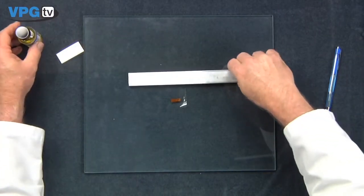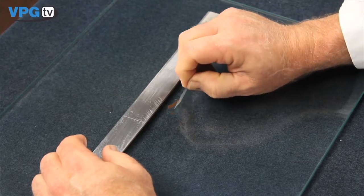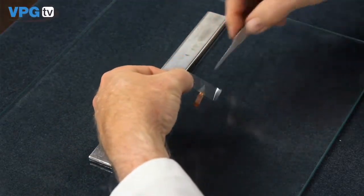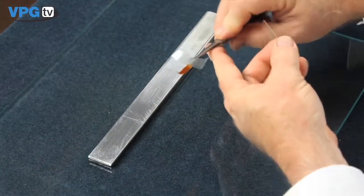Lift the tape at a shallow angle to prevent damaging the unbonded gauge. Remove it from the work surface.